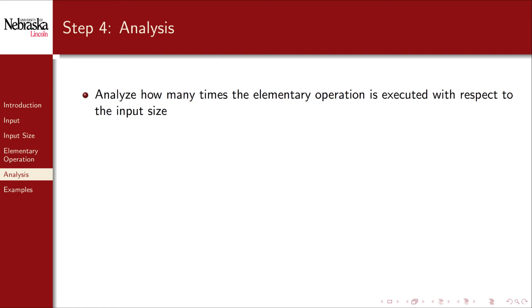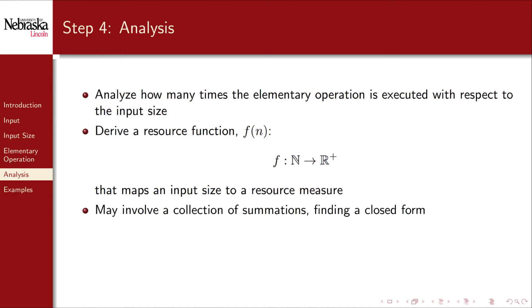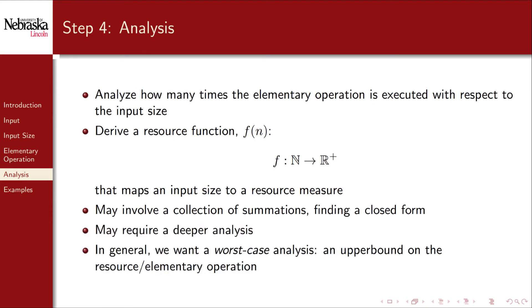The second to last step is to analyze how many times the elementary operation chosen in step 3 is executed with respect to the input size identified in step 2. Our goal here is to derive a resource function f that maps an input size to a resource measure. For our purposes, the mapping maps non-negative integers to positive reals. This may involve setting up and solving a series of summations, or it may require a deeper analysis. In general, however, we will consider a worst case analysis because we're interested in an upper bound on the amount of resources an algorithm will consume in its execution.